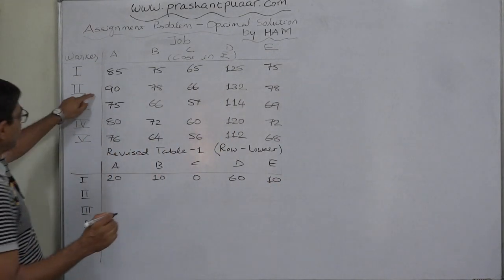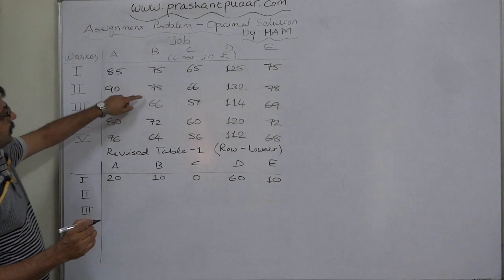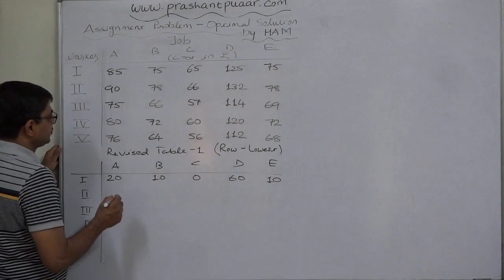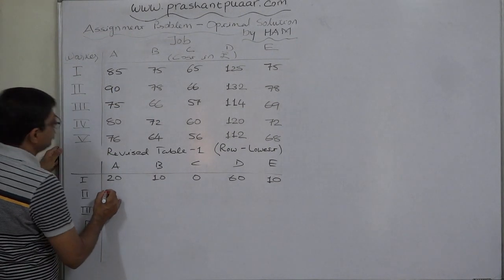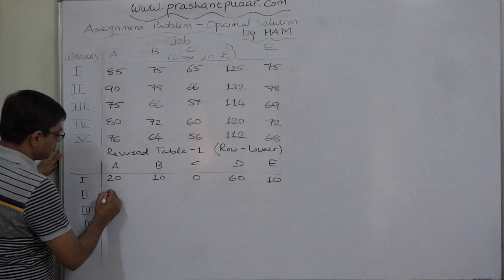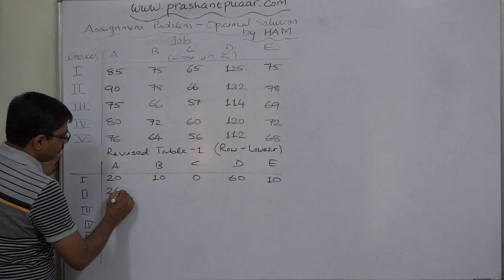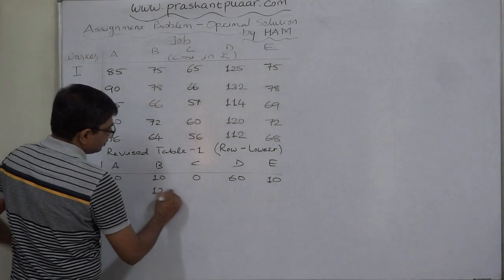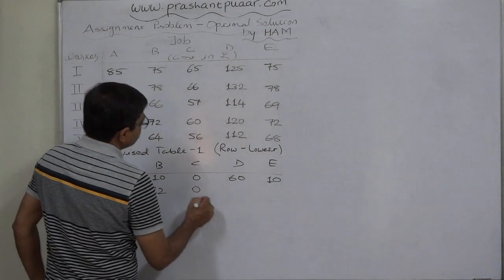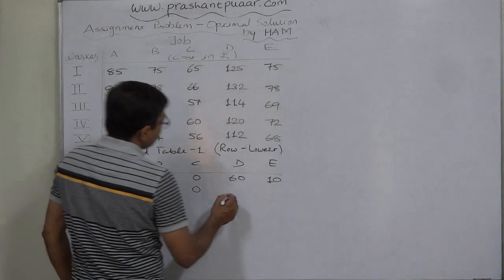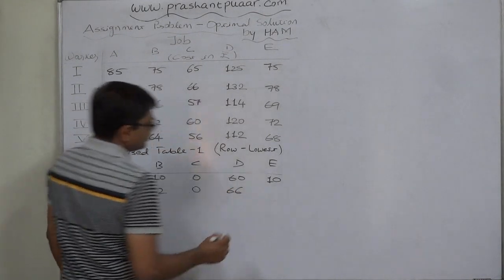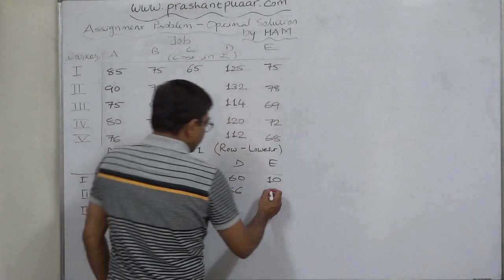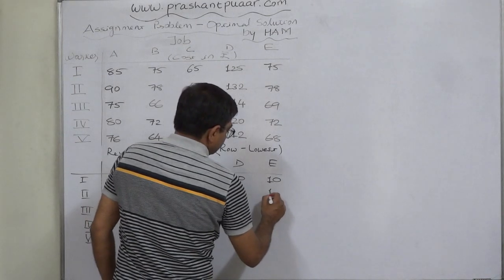In the second row, the lowest value is 66. Subtracting 66: 90 minus 66 is 24, 78 minus 66 is 12, 66 minus 66 is 0, 132 minus 66 is 66, and 78 minus 66 is 12.